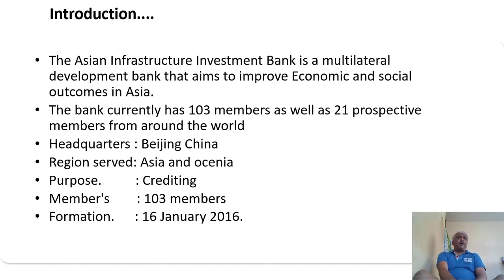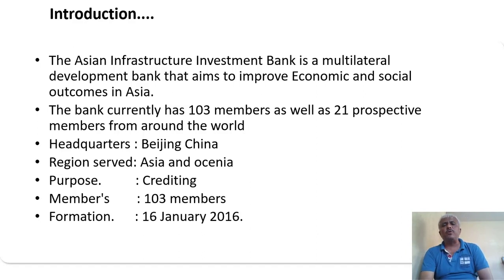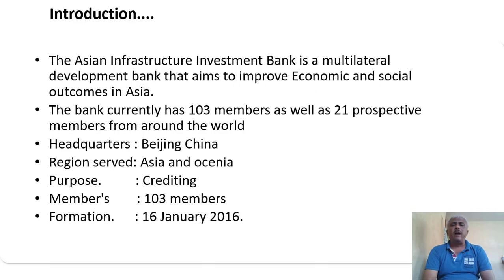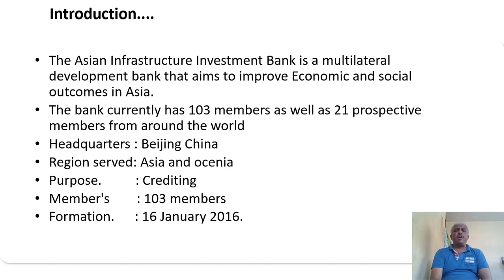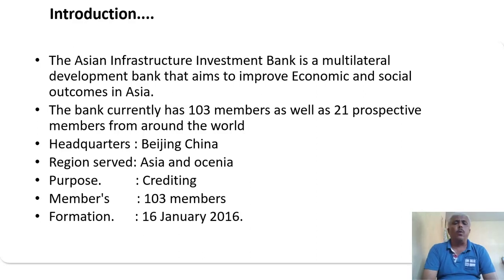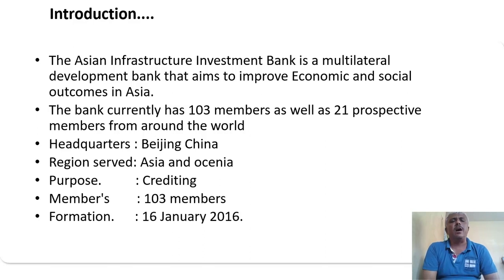Introduction. The Asian Infrastructure Investment Bank is a multilateral development bank that aims to improve economic and social outcomes in Asia. The bank currently has 103 members as well as 21 prospective members from around the world. The headquarters of AIIB is located within China, in the region of Asia and Oceania. It was formulated on 16th January 2016.